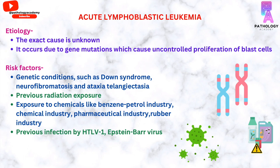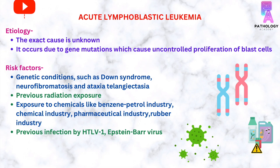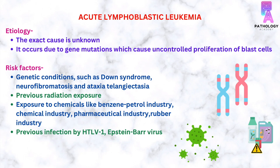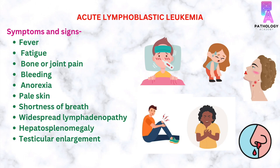Coming to the etiology of ALL, the exact etiology is unknown. It occurs mainly due to genetic mutations which cause uncontrolled proliferation of blast cells. There are many risk factors associated with ALL, which include genetic conditions such as Down syndrome, neurofibromatosis, and ataxia-telangiectasia, previous radiation exposure, exposure to chemicals like benzene, and previous infection by HTLV-1 or Epstein-Barr virus.